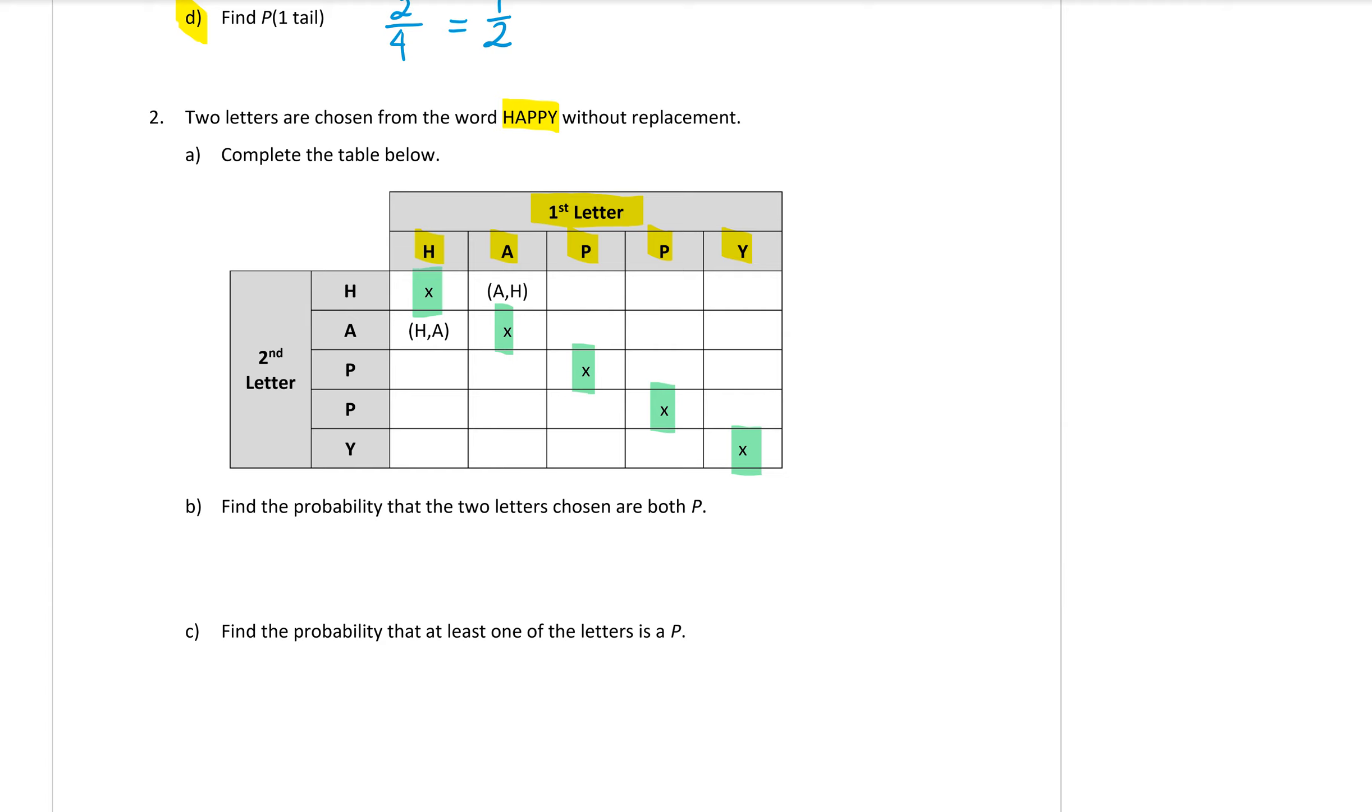Okay, but we do want to fill in the rest of the outcomes around that. So let's fill them in. So we can have an H and an A using the first letter first. The next one would be H and a P. Let's go down this column. We get H and another P because there's two P's in the word HAPPY.